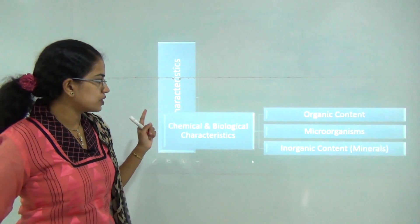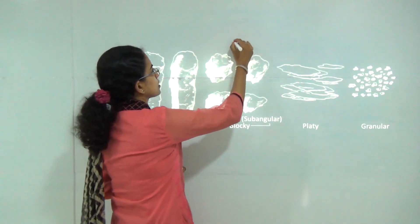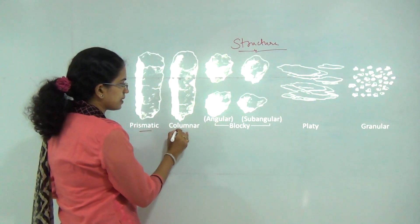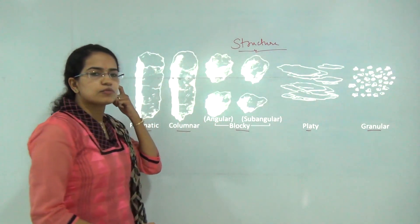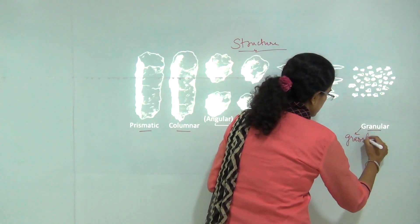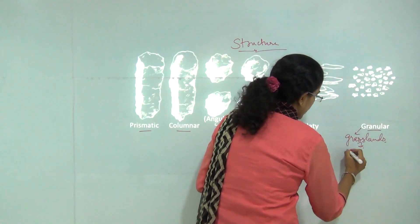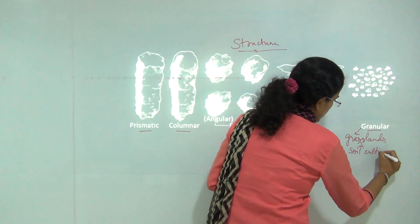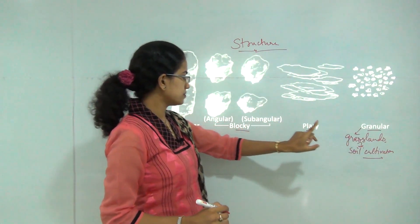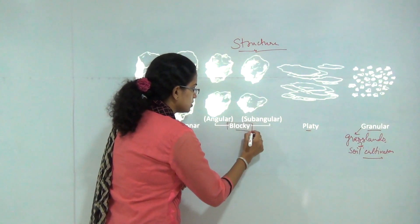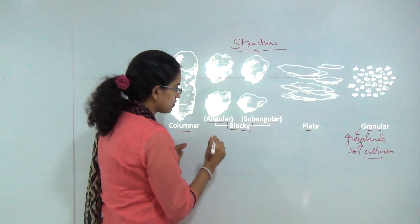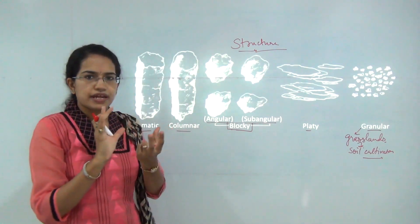Let's start with the first physical characteristic — the structure of the soil. The structure of the soil can be of various types: it can be prismatic, columnar, blocky, platy, or granular. The most common is granular soil, which is found in most grasslands and is most suitable or ideal for agricultural purposes. Then you have blocky soil, which can be either angular or subangular.